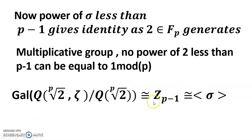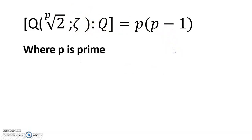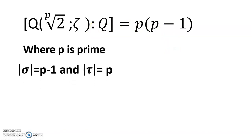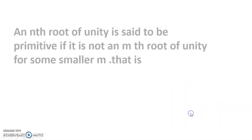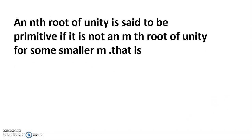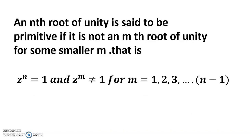So the Galois group of ℚ(2^(1/p), ξ) over ℚ has order p·(p-1), where p is prime, the order of σ is p-1, and the order of τ is p. When p is not prime, the order of the Galois group of ℚ(2^(1/n), ξ) over ℚ equals n·φ(n)/2. Finally, the n-th root of unity is said to be primitive if it is not an m-th root of unity for any smaller m, that is ξ^n = 1 but ξ^m ≠ 1 for m = 1, 2, …, n-1. Thanks for watching.